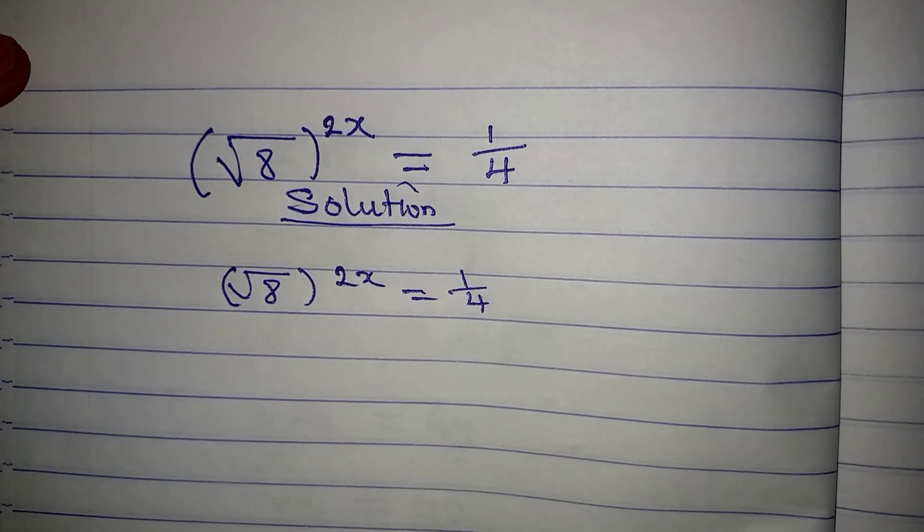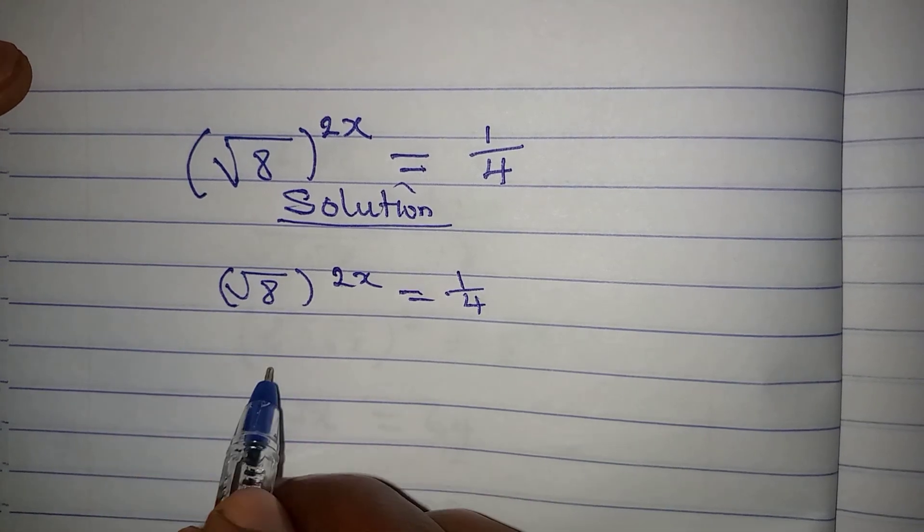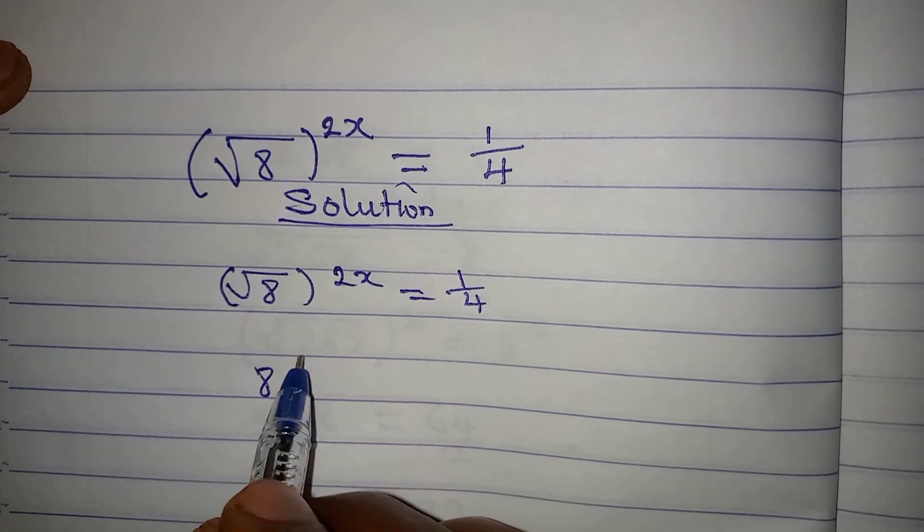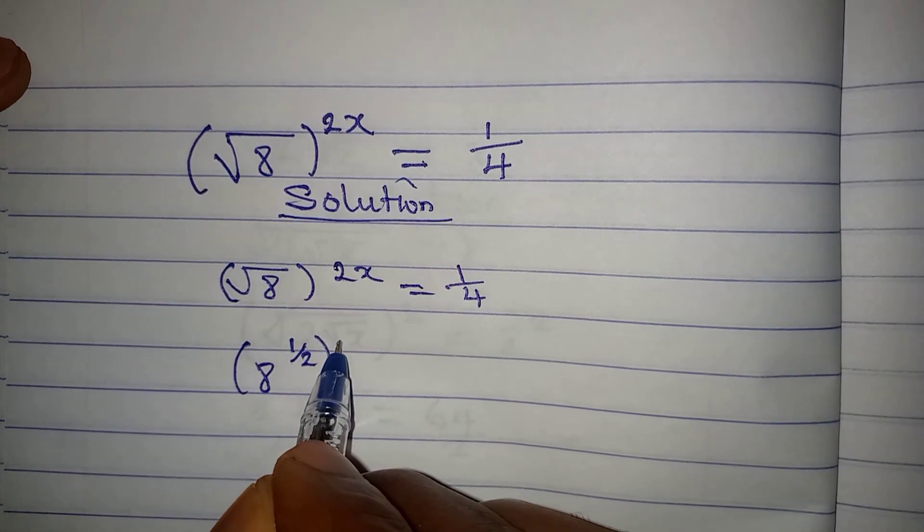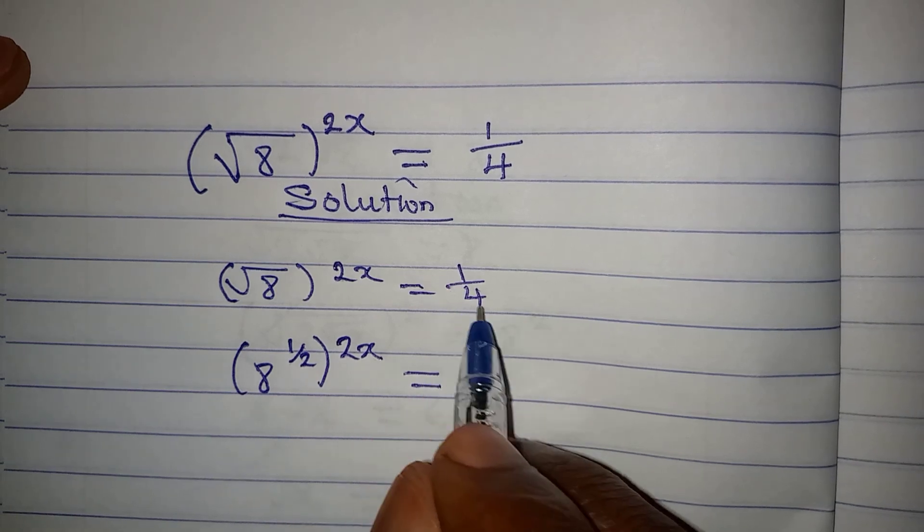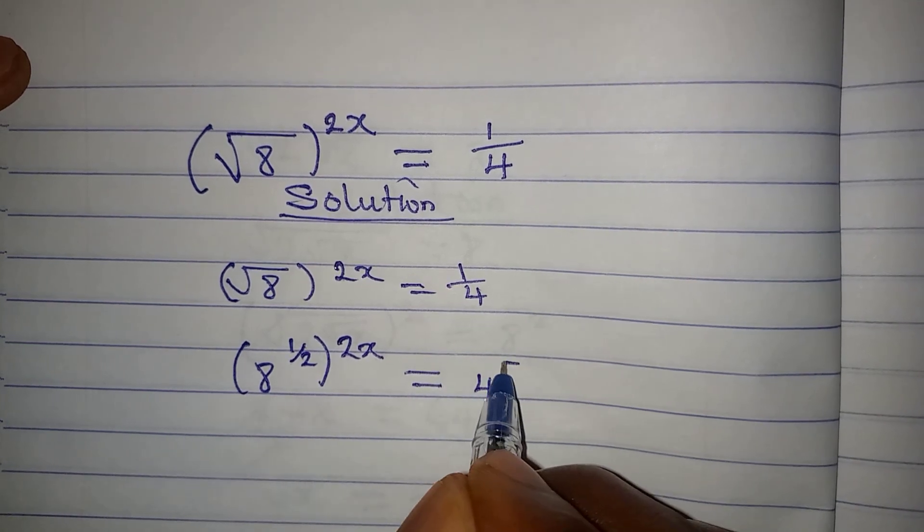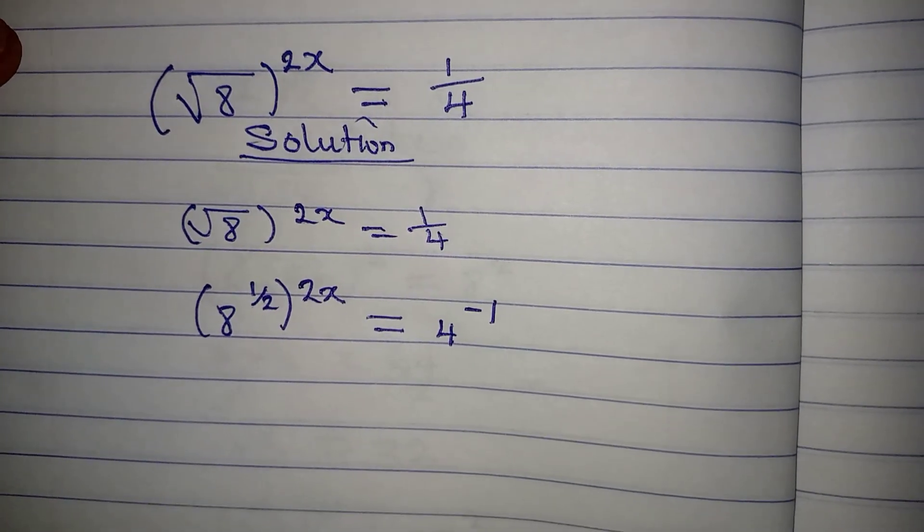Are you thinking this is hard? In that case, you have to think again. 8 here, the square root of 8, is 8 to the power of 1 over 2. And then here we have power of 2x. This is equal to 1 over 4, which is 4 to the power of negative 1 according to law of indices.